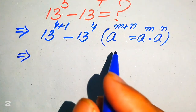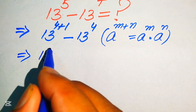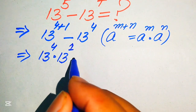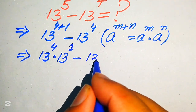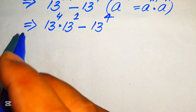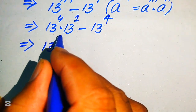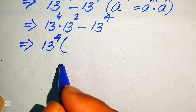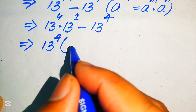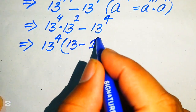According to this exponent law, we break the exponent and it will be written as 13 to the power of 4 multiplied by 13 to the power of 1, minus 13 to the power of 4. Now in the next step we take 13 to the power of 4 as a common factor and find the remaining values.